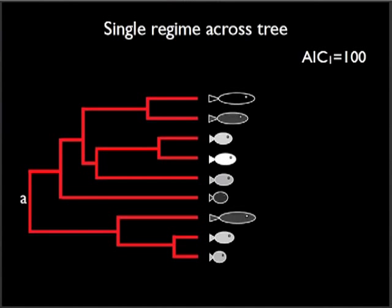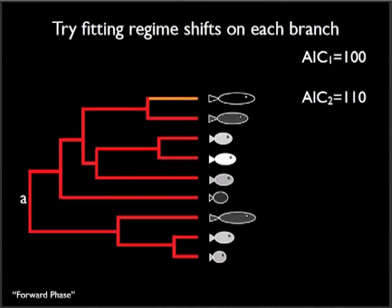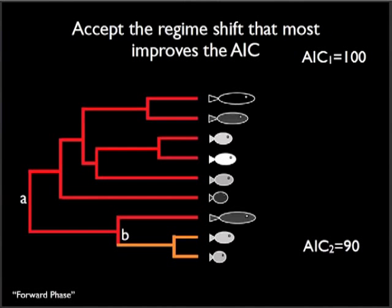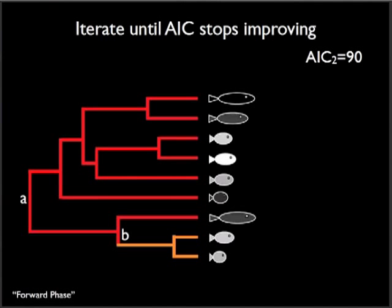The first or forward phase of a SURFACE analysis begins with all lineages in the tree belonging to the same regime and attracted to the same adaptive peak. We calculate the AIC of this model, and then we add a regime shift to one branch at a time, recalculating the AIC for each candidate model, and identifying the shift point that has the best, i.e. the lowest, AIC value. We keep this regime shift in the model and start over, adding a shift to the best branch at each step.